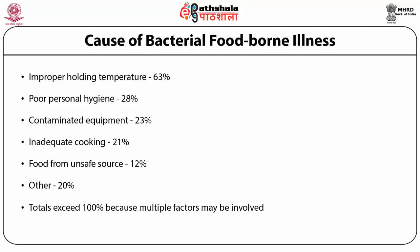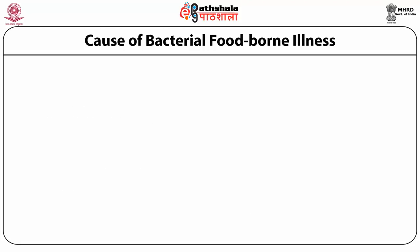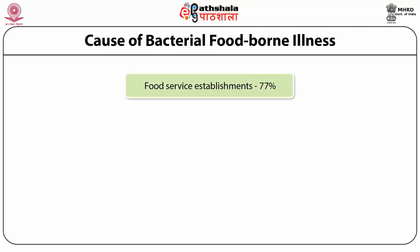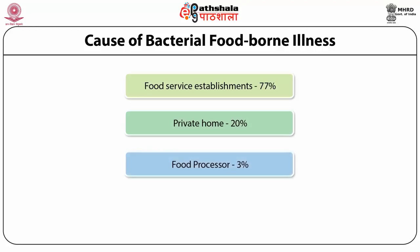The total exceeds 100% because multiple factors may be involved simultaneously. Regarding sources of bacterial foodborne illness: food service establishments account for 77%, private homes for 20%, and food processors for 3% of contamination chances.